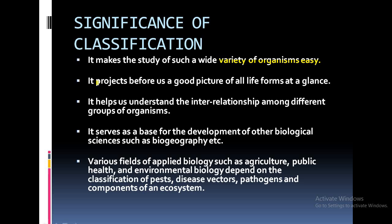Classification projects before us a good picture of all life forms at a glance, which is why a four or five year old child can identify whether a given animal is a fish, a bird, terrestrial or aquatic. It also helps us understand the interrelationship among the different groups of organisms. It also serves as a base for the development of other biological sciences.